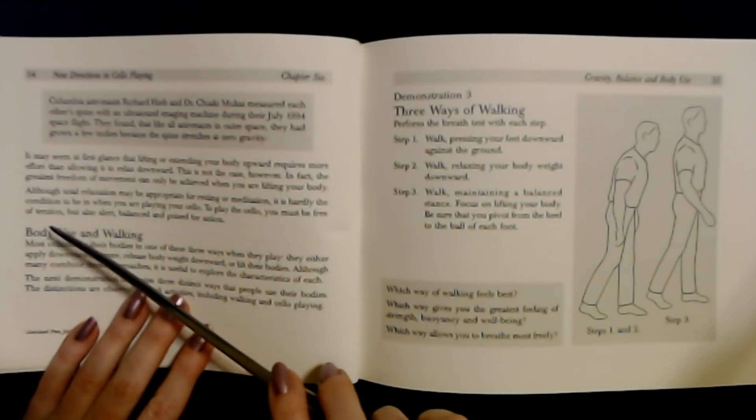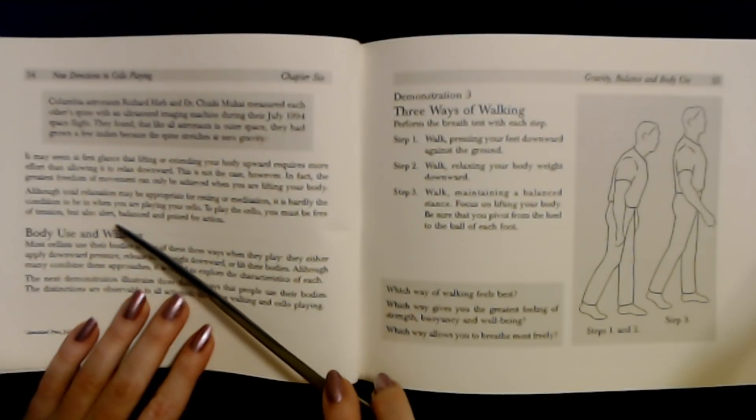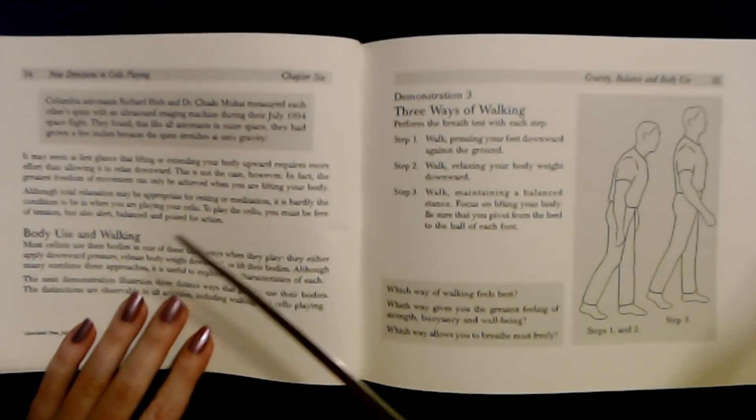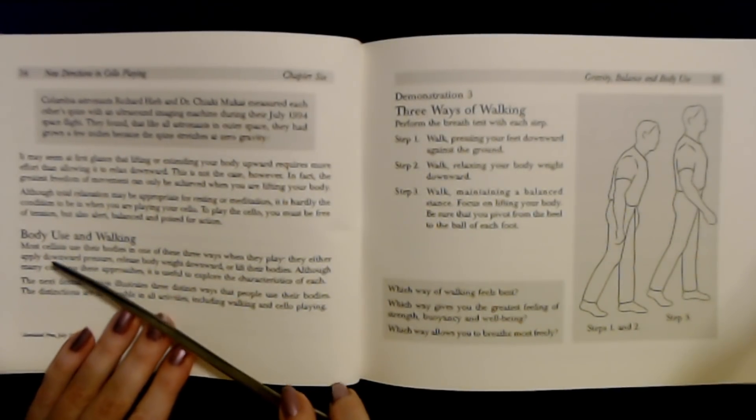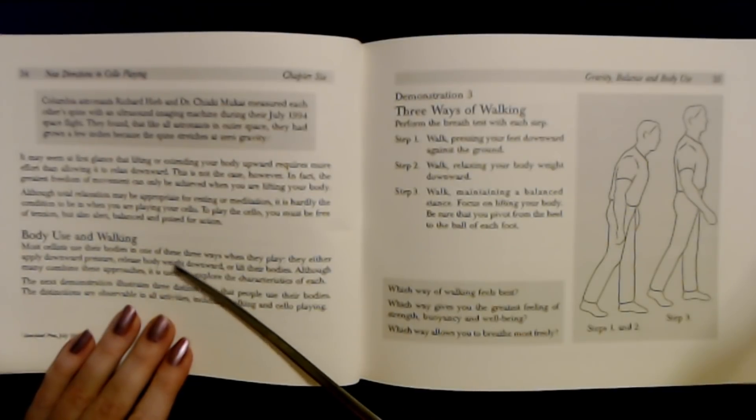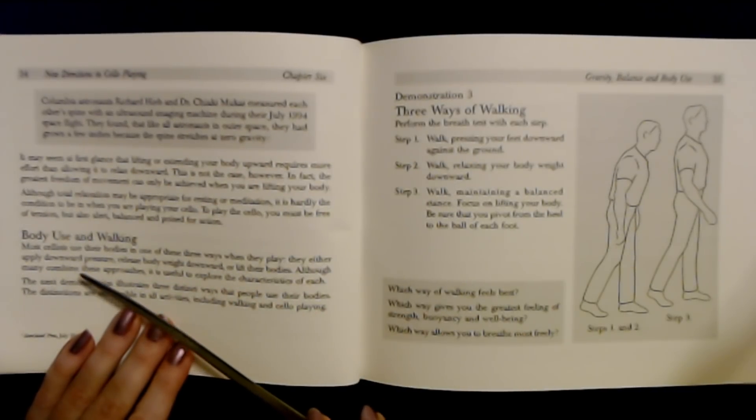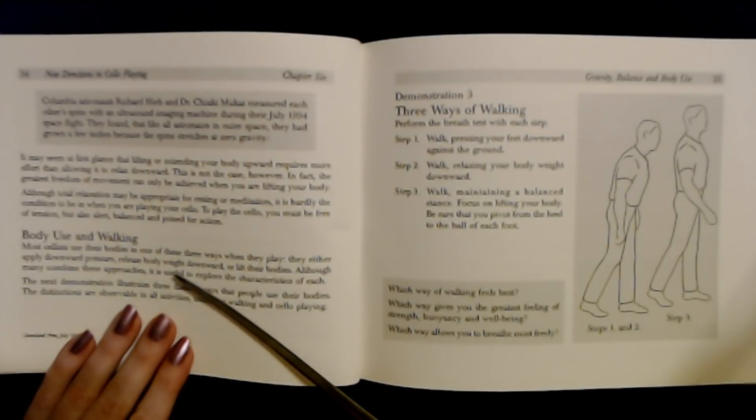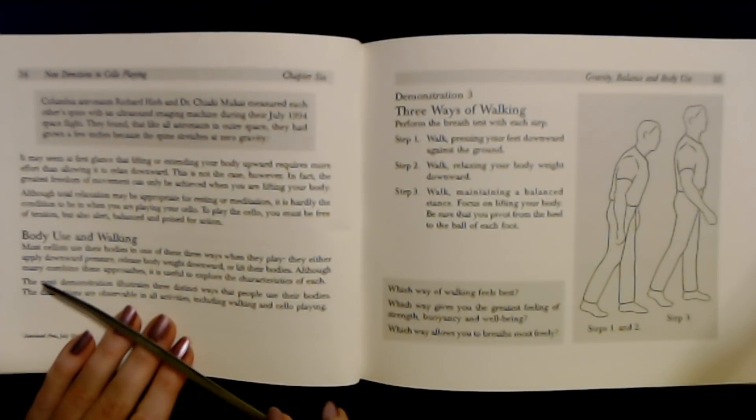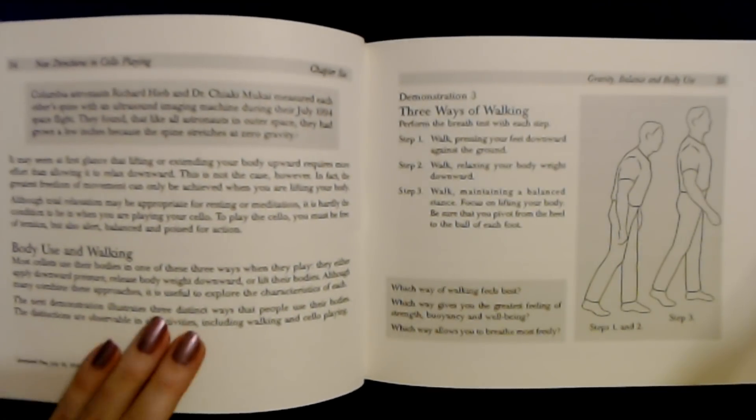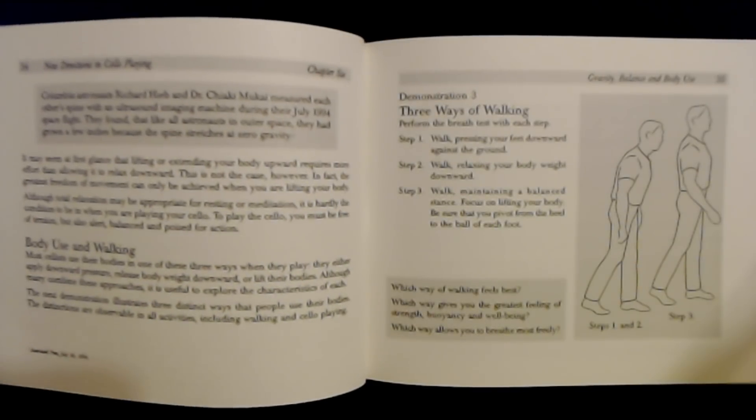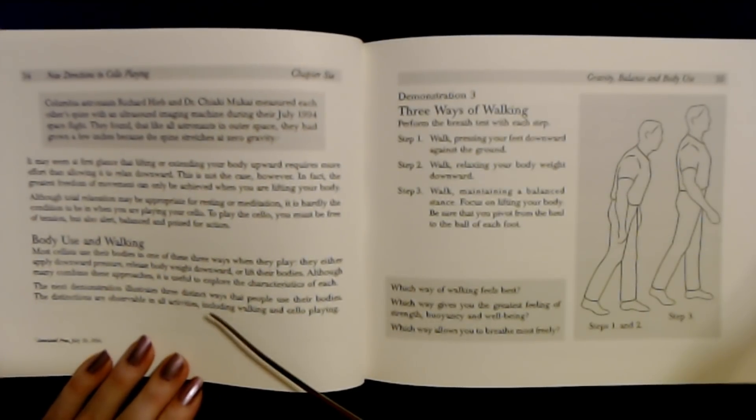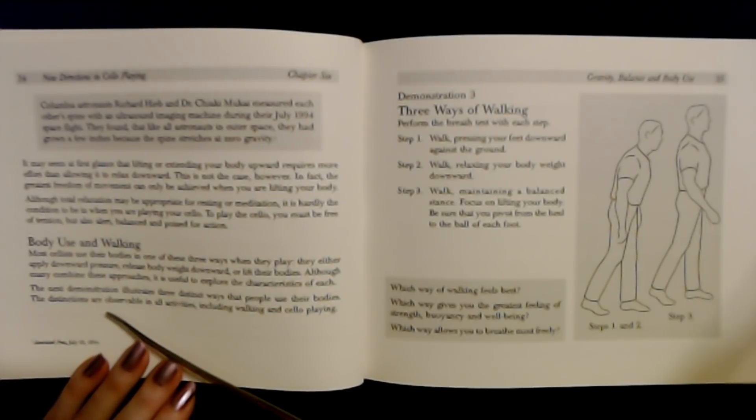To play your cello, you must be free of tension, but also grounded in the middle with clear voice direction and body use in walking. Most cellists use their bodies in one of three ways they play, either passively or actively.